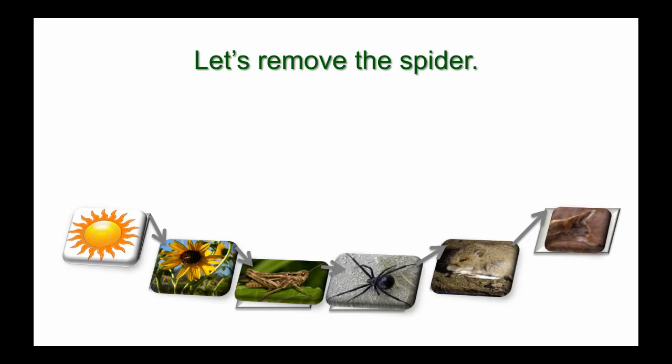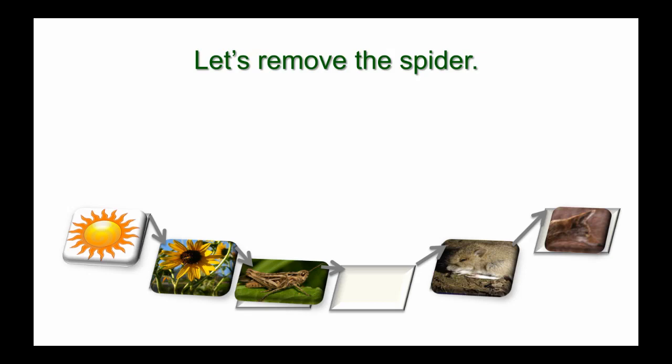Let's try this again — let's remove the spider this time. What's going to happen? The grasshopper population would go up and the plant population would go down. If the spider population is gone completely, the mouse population would go down as well, and the coyote population would probably go down too.